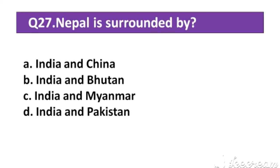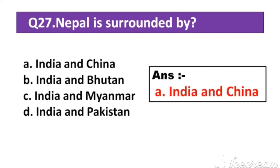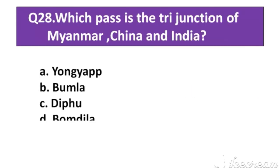Question number 27: Nepal is surrounded by which countries? Option A: India and China. Option B: India and Bhutan. Option C: India and Myanmar. Option D: India and Pakistan. The right answer is Option A: India and China.